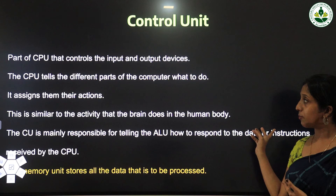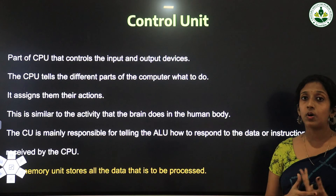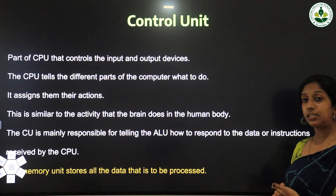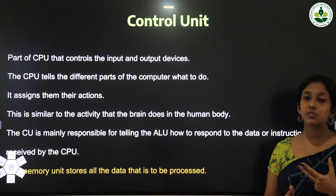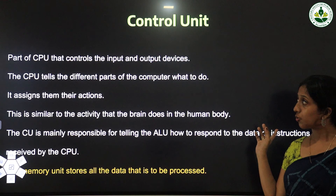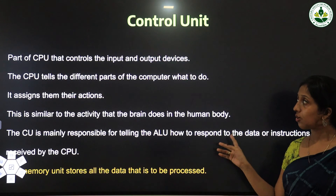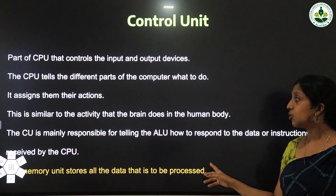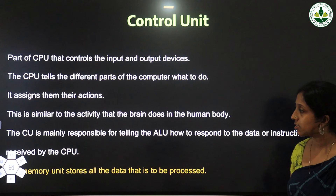The CPU tells the different parts of the computer what to do and what actions they have to perform. It is similar to the activity that the brain does in the human body — just as the brain controls our body and gives signals to different parts, in the same way the Control Unit controls the input and output devices and tells different parts of the computer what to do.